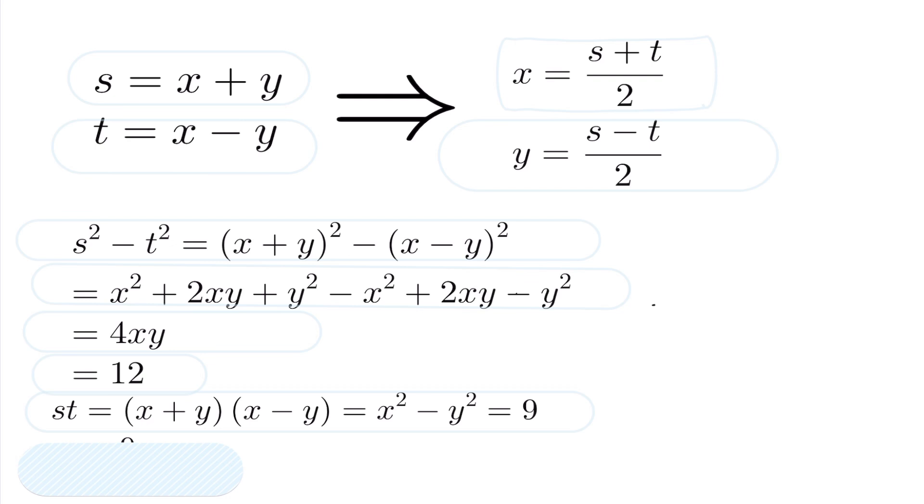And likewise, the product of s and t would be the product of the sum and difference of the x and y values, which, if you expand them out, that is x squared minus y squared, gives us 9. So therefore, I know that t is equal to 9 over s.